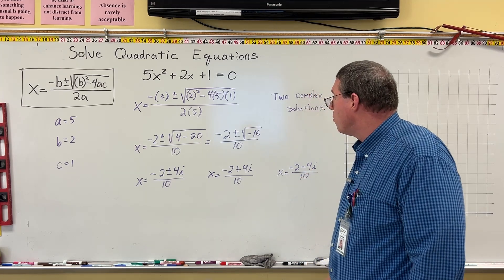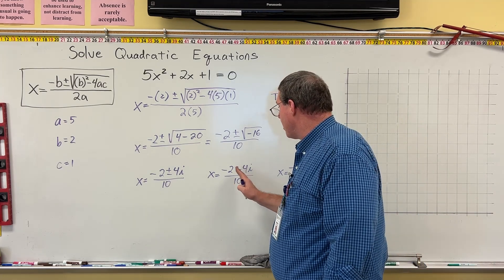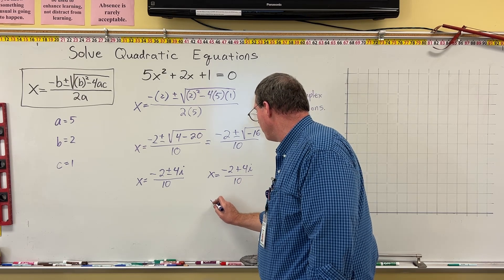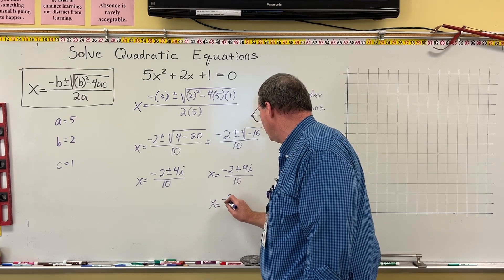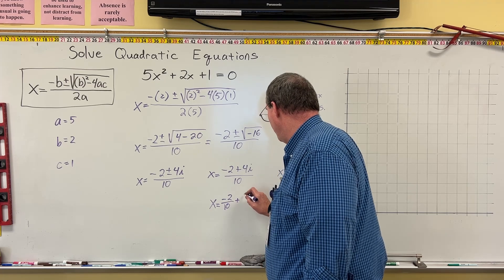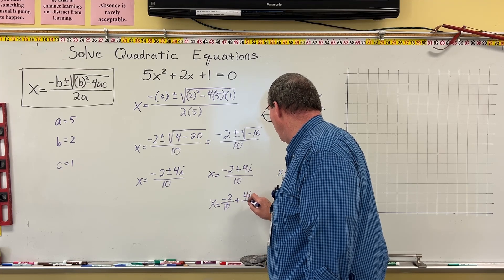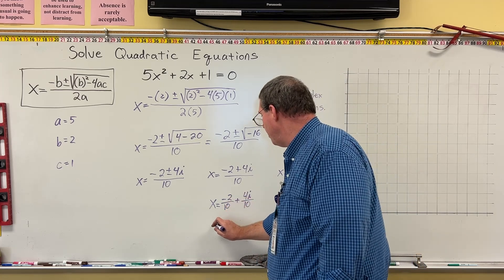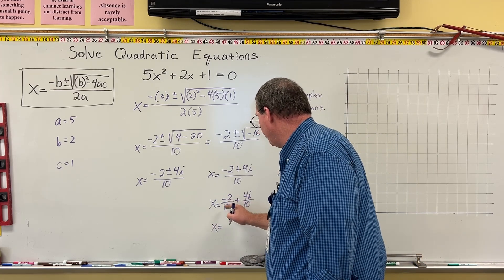Remember, we have to separate the fractions. We can't just have it over 10. We have to write x is equal to negative 2 over 10 plus 4i over 10. But this still isn't even done, because we need to simplify negative 2 over 10.